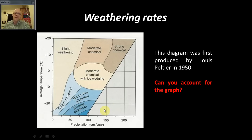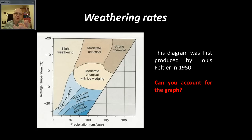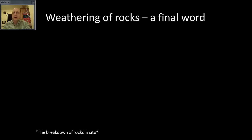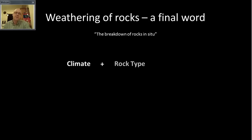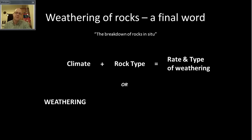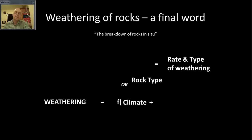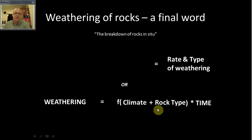Fatigue processes like freeze-thaw work where temperatures oscillate around zero degrees, which is why Peltier found more physical activity in cooler areas. Why is there nothing in the very cold region? Because in very cold places we don't get much precipitation — some of the driest places on Earth are in Antarctica. So to summarize: the breakdown of rocks in situ is weathering, and climate plus rock type gives you the rate and type of weathering that dominates. Weathering is a function of climate plus rock type, times by time — because climate changes but rock type pretty much doesn't. That's the end of these three videos!